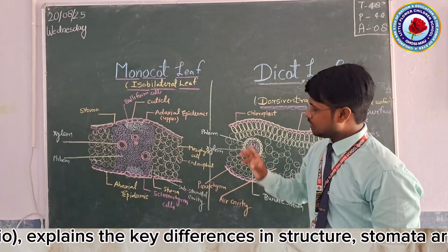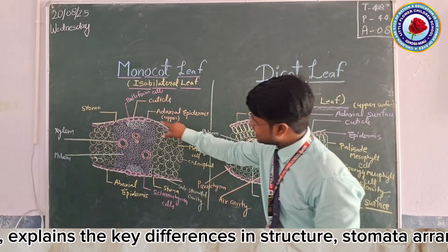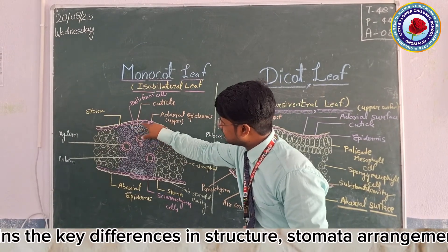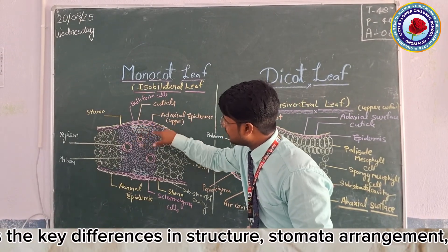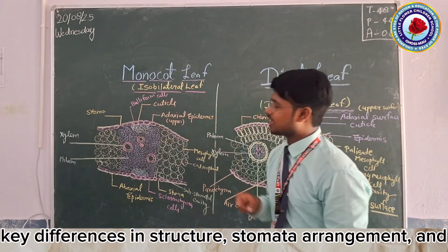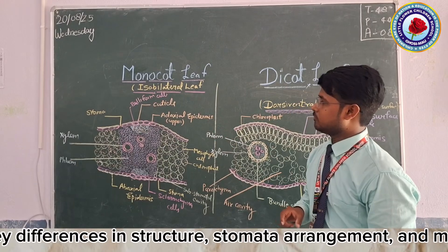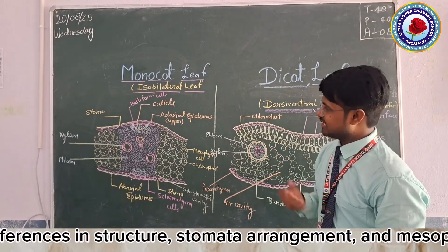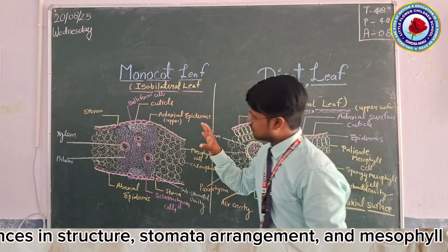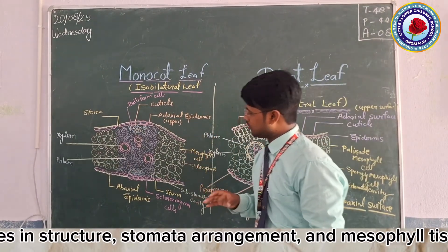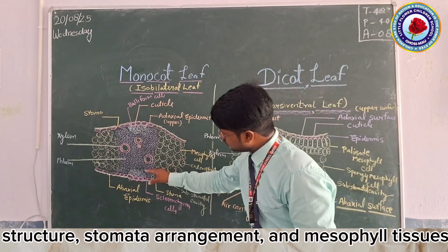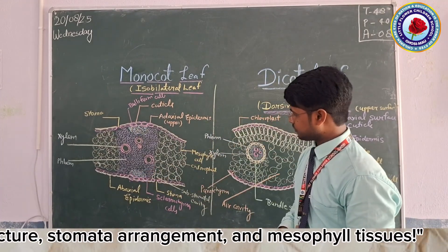There is also a different type of cell — a sclerenchyma cell — which is in a dead condition. It helps in providing rigidity to the leaf and also has some functional association with the bulliform cells.